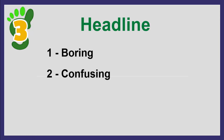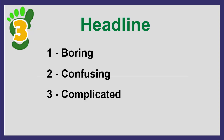Secondly, they're confusing — it's unclear what they do and who they help. And many are just downright complicated. Here's how not to be boring, confusing, and complicated. You can do it easily by deciding on three things: what you do, who you help, and the benefit of that help.